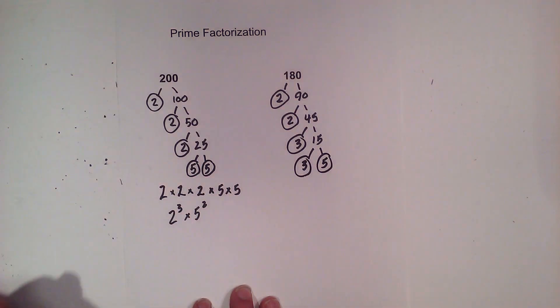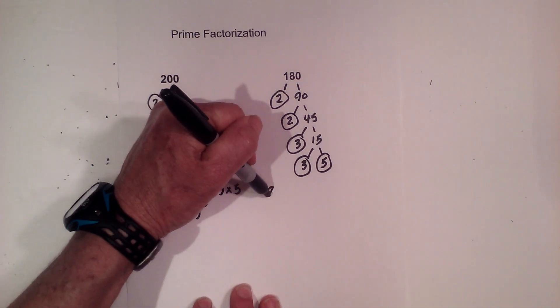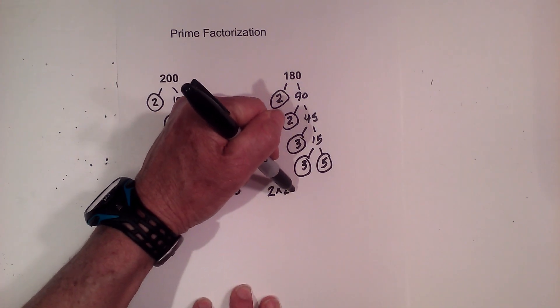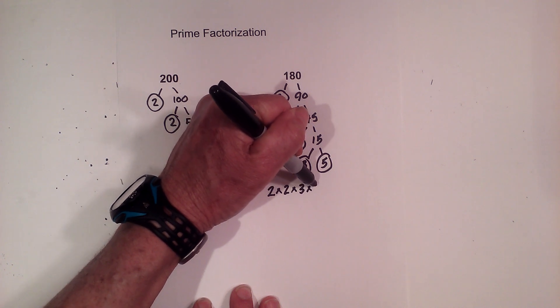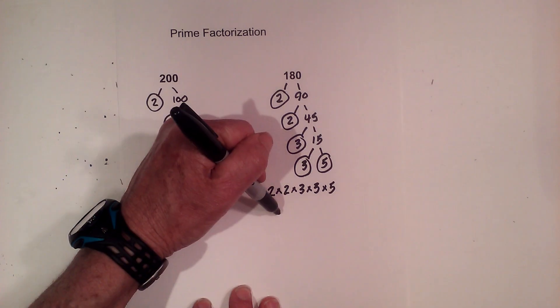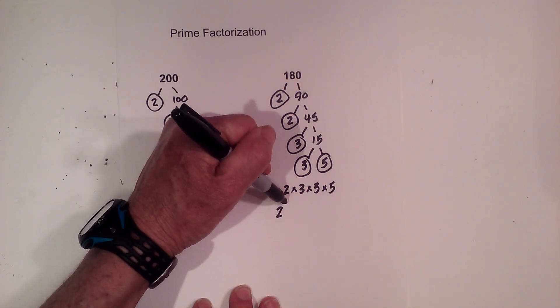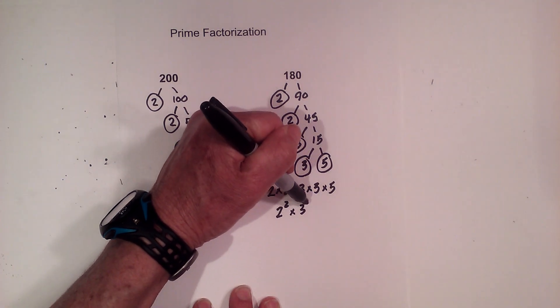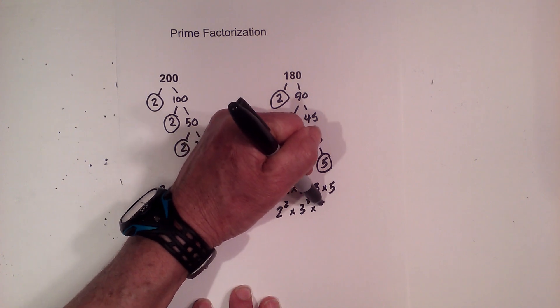Circle both 3 and 5 because they are prime. So it is now 2 times 2 times 3 times 3 times 5. Or you could shorten that with 2 squared times 3 squared times 5.